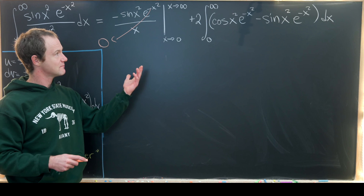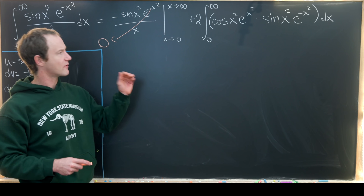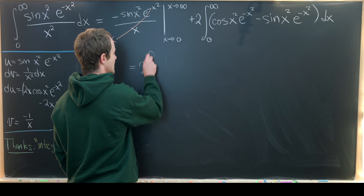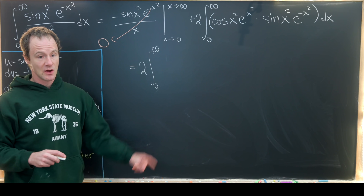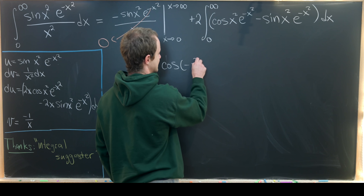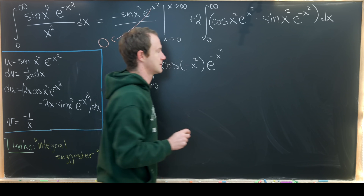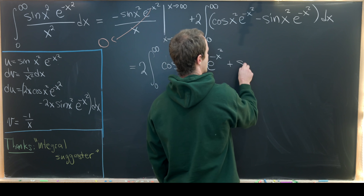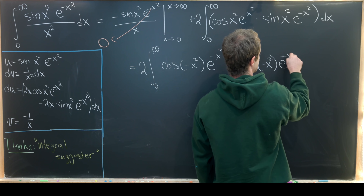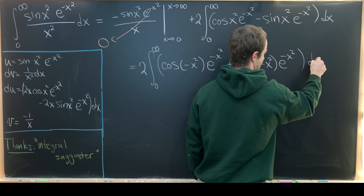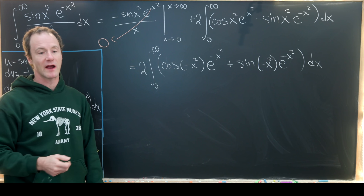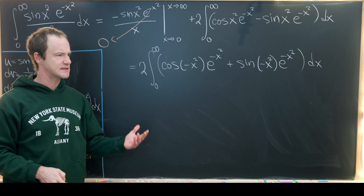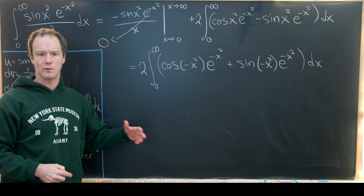A nice approach now is to rewrite the cosines and sines as complex exponentials. We can write cosine of x squared as cosine of minus x squared, and since sine is odd, minus sine of x squared equals sine of minus x squared. This small rewriting step lets us use Euler's formula: cosine of minus x squared is the real part of e to the minus i x squared, and sine of minus x squared is the imaginary part of that same exponential.